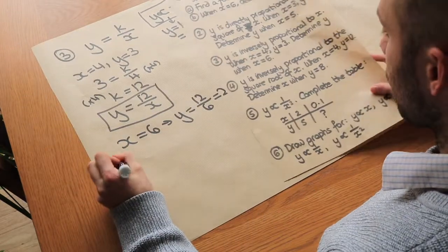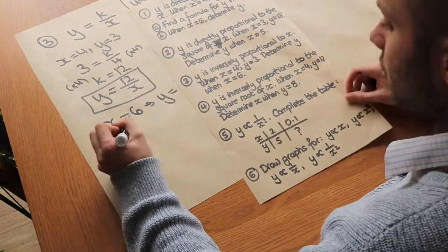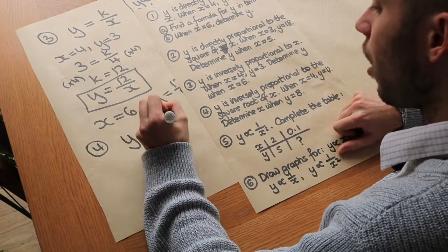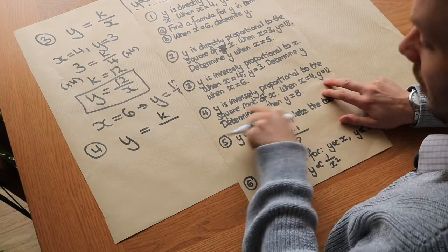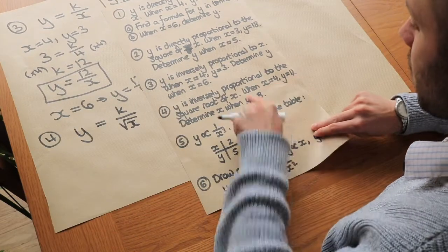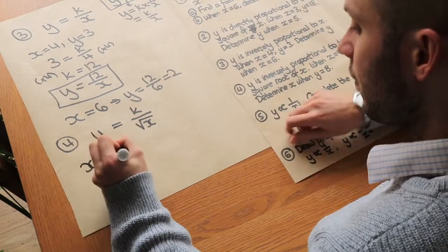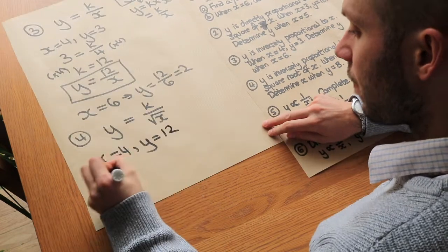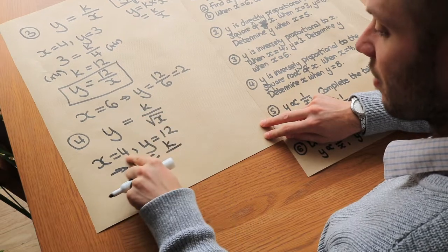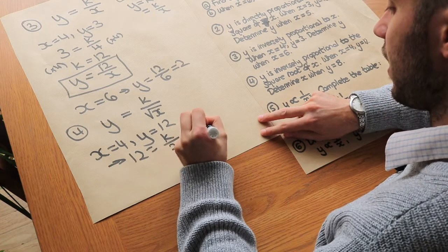Question 4: y is inversely proportional to the square root of x. Writing this as an equation: y equals k over the square root of x. Using the given values — when x is 4, y is 12 — we substitute: 12 equals k over the square root of 4, which is 2. Multiplying both sides by 2 gives k equals 24.